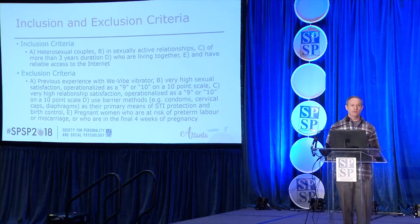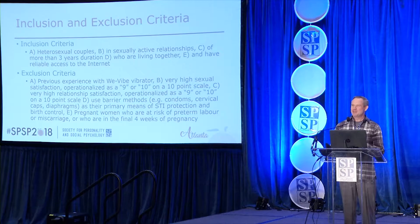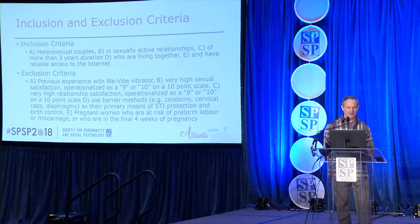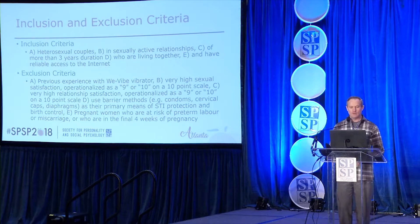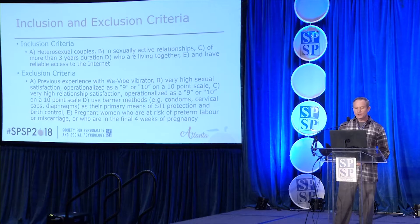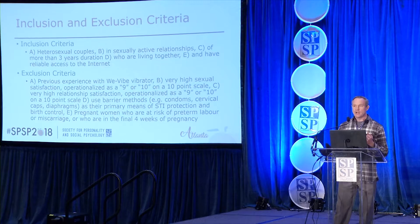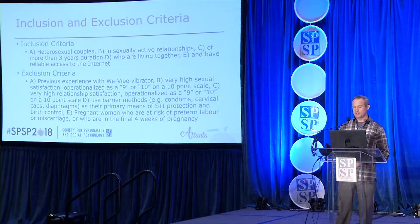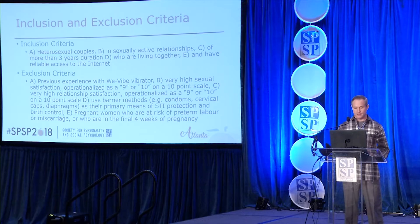We had a lot of inclusion and exclusion criteria stipulated in advance. Some came from the ethics board—they asked, for instance, what if participants use the vibrator in an unintended way, raising safety concerns. We had to get creative with the ethics board. We focused initially on heterosexual couples who are in a sexually active relationship at least three years in length, living together, with reliable internet access. One challenging exclusion criterion was that they couldn't be using certain barrier methods of birth control, partly because contact between a condom and the vibrator could cause tearing, introducing risk.